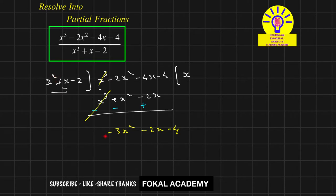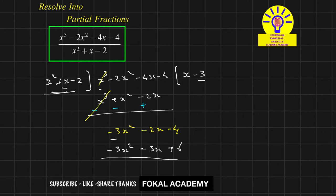Now x squared terms remain, so we divide again. The coefficient is minus 3, so multiply minus 3 by the denominator to get minus 3x squared minus 3x plus 6. Subtracting gives a remainder of x minus 10. So the division yields a quotient of x minus 3 with remainder x minus 10.